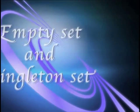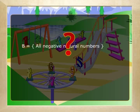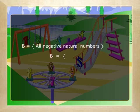Now we know the representations of sets and how to write a set. Let us now look at the empty set, the null set, and the singleton set. Consider B = the set of all negative natural numbers. Do we have a natural number that is negative? No. So the set is written as B = {} or B = φ. We call such sets with no elements the null set or empty set.